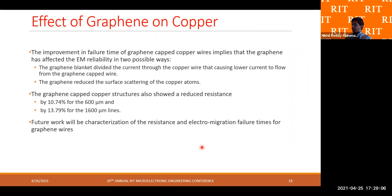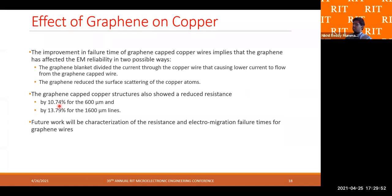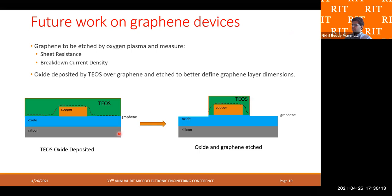Based on the electromigration failure times observed for both the copper and graphene-capped copper wires, it can be implied that the graphene did impact the EM reliability of these copper wires. There are two possible mechanisms: first, the graphene may have divided the current forced through the wire, reducing the effective current density to the actual wire and increasing failure time; second, the graphene may have decreased the surface diffusion of copper atoms, or both effects could have contributed. The graphene cap reduced resistance by 10.74% for the 600-micron lines and by 13.79% for the 1600-micron lines, but future work is needed to characterize exactly how graphene affects EM reliability.